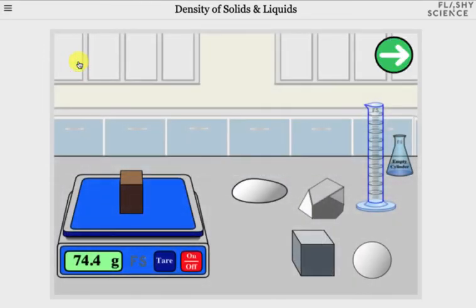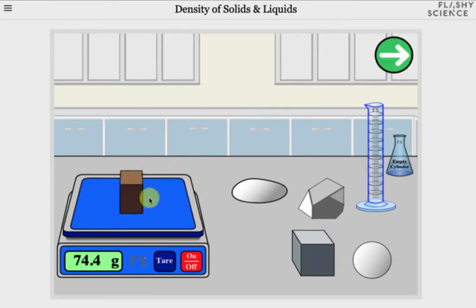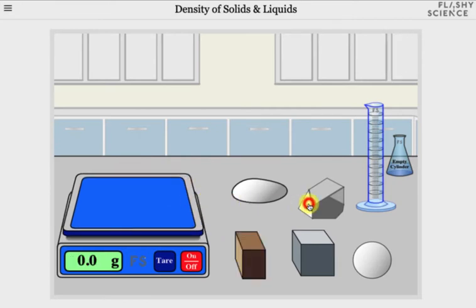Now it's not possible to measure the volume of irregular shapes with a ruler, so let's see how that's done instead. Remove the cuboid from the mass balance either by clicking and dragging it into its original position or by clicking on any other object. Then drag either the pebble shape or prism onto the balance to measure its mass.